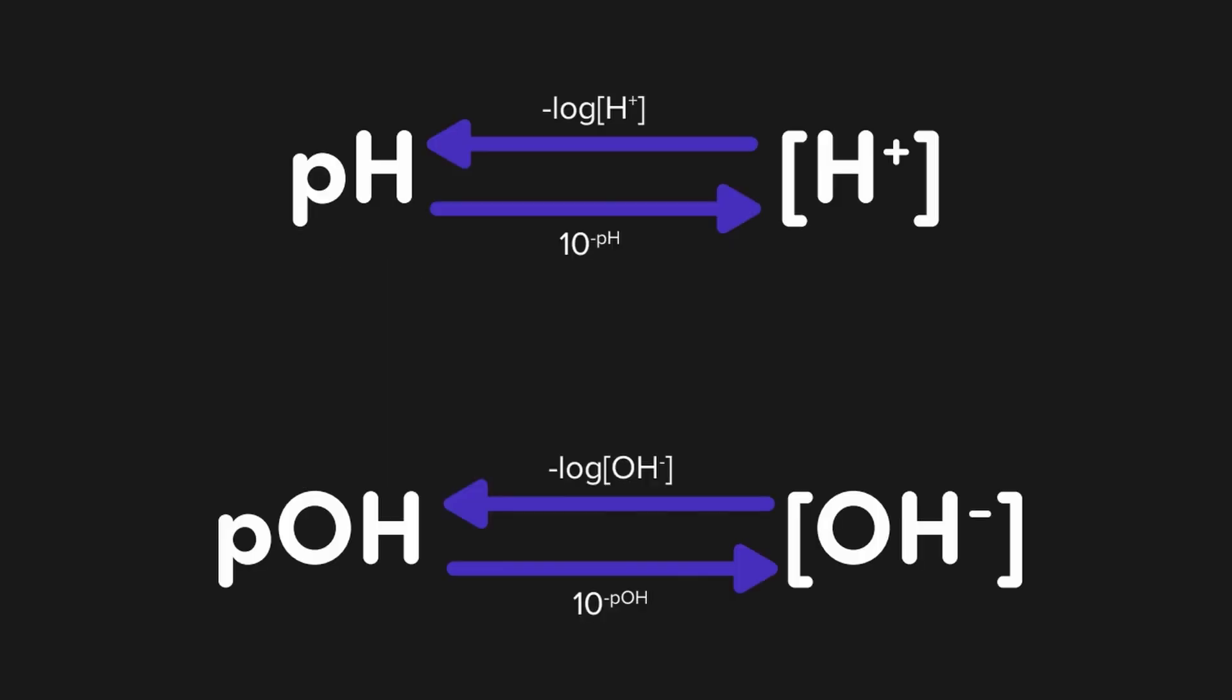For instance, if we want to calculate between pH and H+ concentration, then we would take the negative log of the H+ concentration to get pH and take 10 to the negative pH to get back to the H+ concentration. The same is true for the relationship between pOH and hydroxide concentration as well.